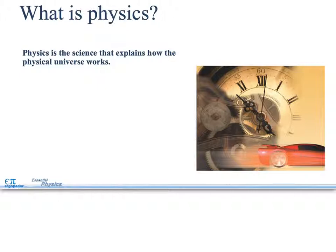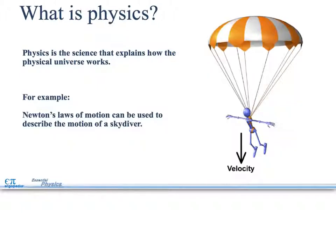What is physics? Physics is a science that explains how the physical universe works. Every other science out there uses physics. We have all these laws and theories in physics, and everything out there has to follow the laws of physics that we have. An example of this would be Newton's laws of motion used to describe the motion of a skydiver. He's going to have a velocity going down, and velocity is one of the terms we use a lot here in physics.